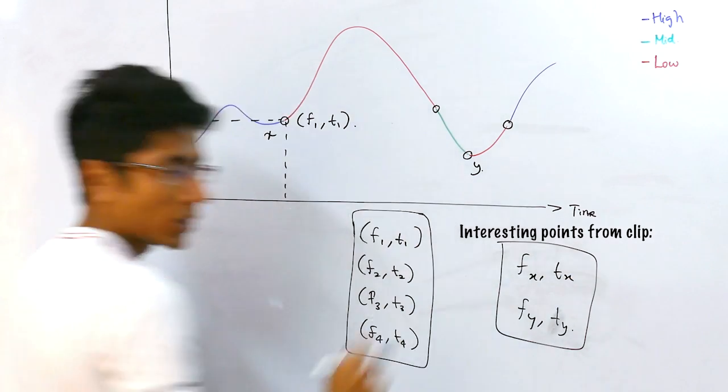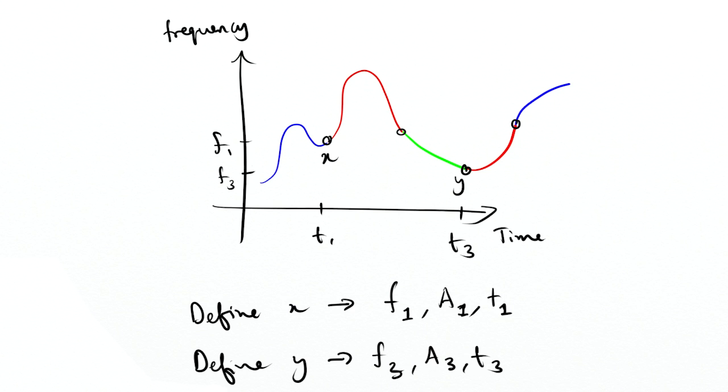Let's assume these are points x and y. Let's assume that we have these points for every song defined in our database as the frequency, amplitude and time of that given point. So for point x you have f1, a1 and t1.